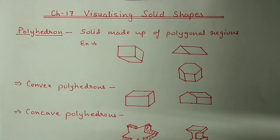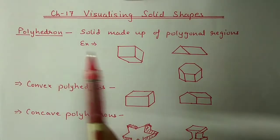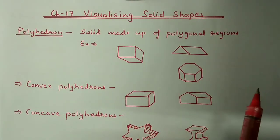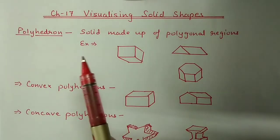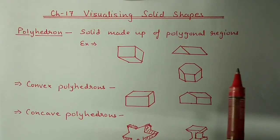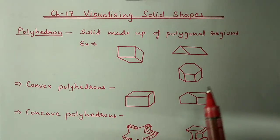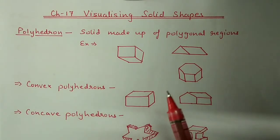Whatever solids are having only straight lines will come under polyhedron. Other solids like cylinder, cone or sphere will not come under polyhedron because these solids are having curved lines.